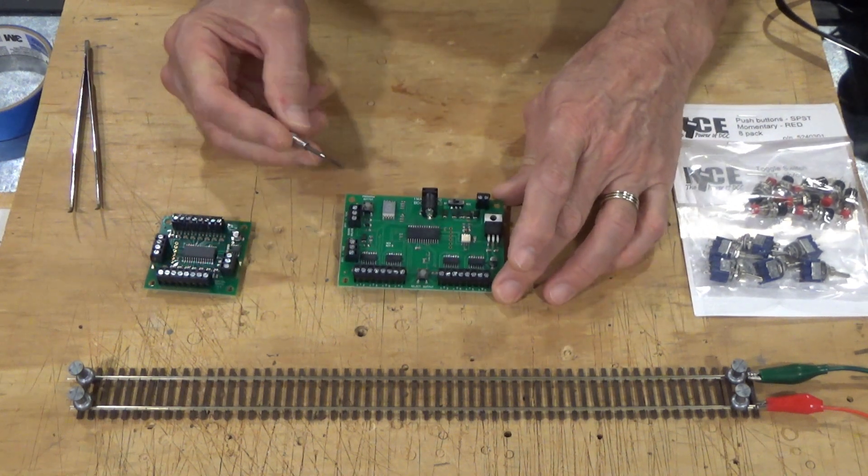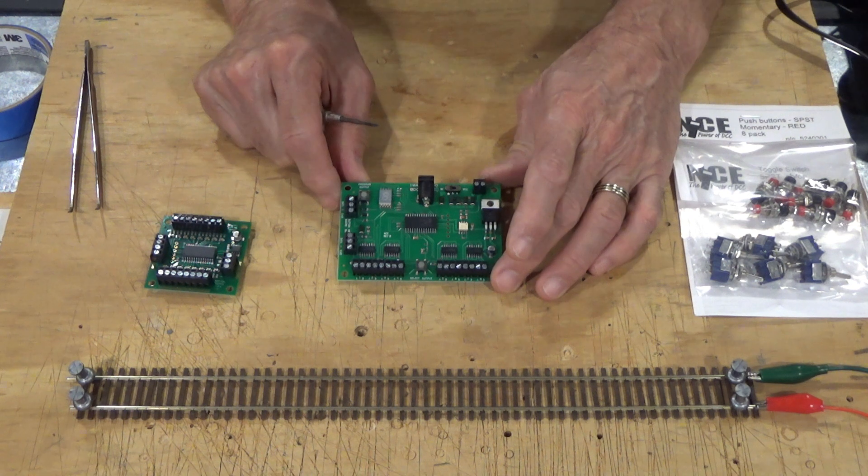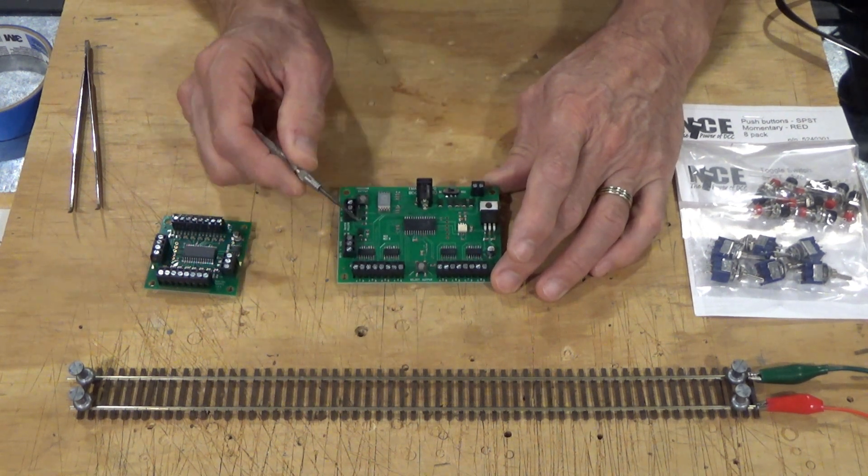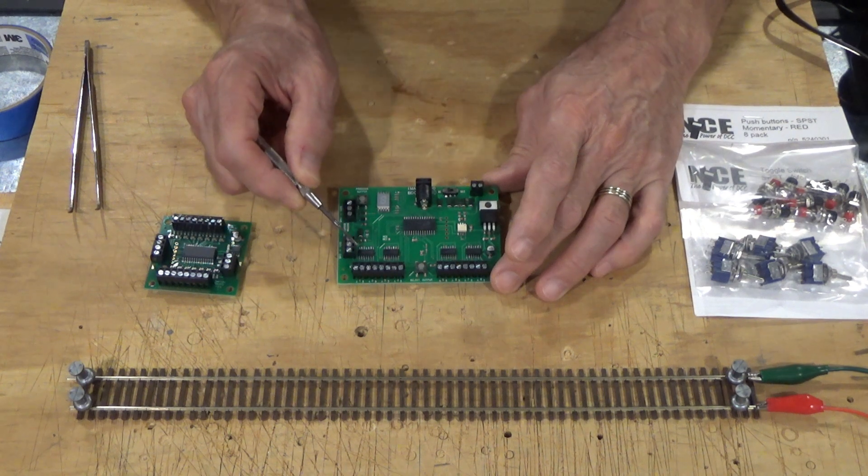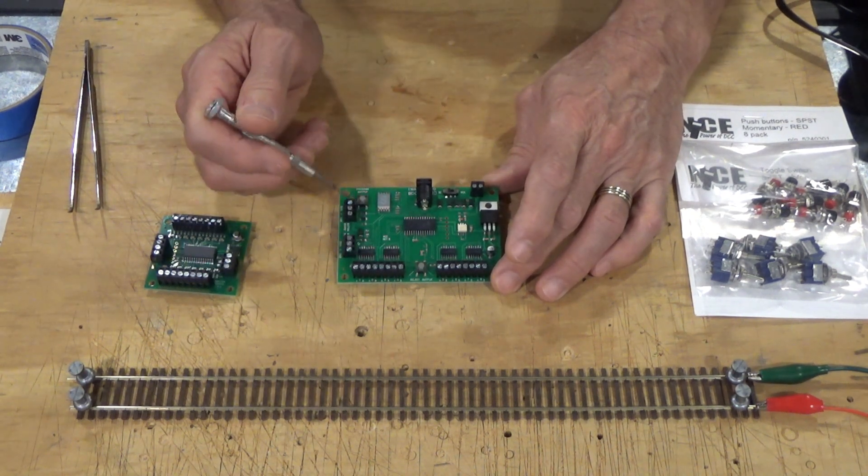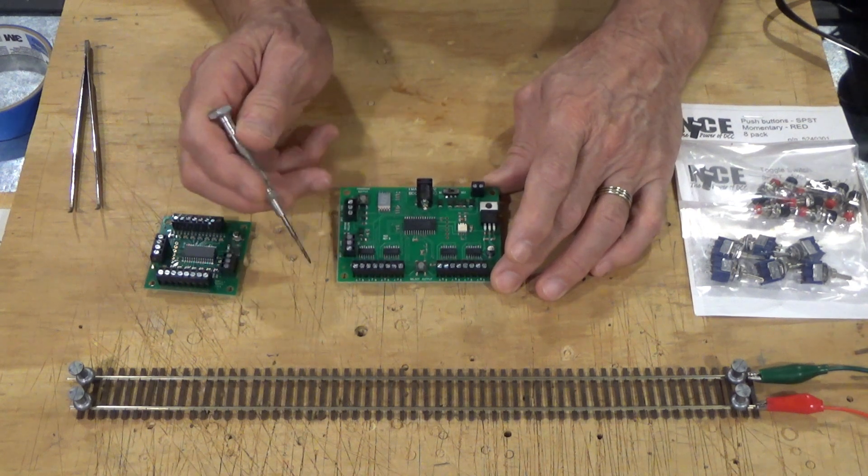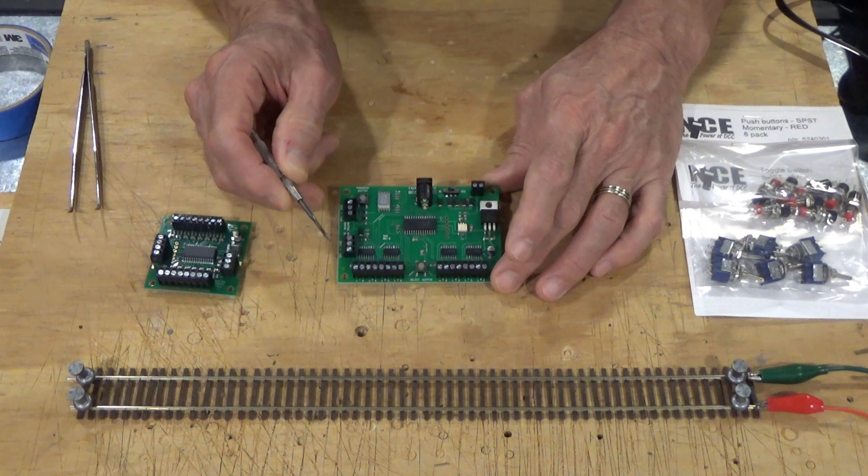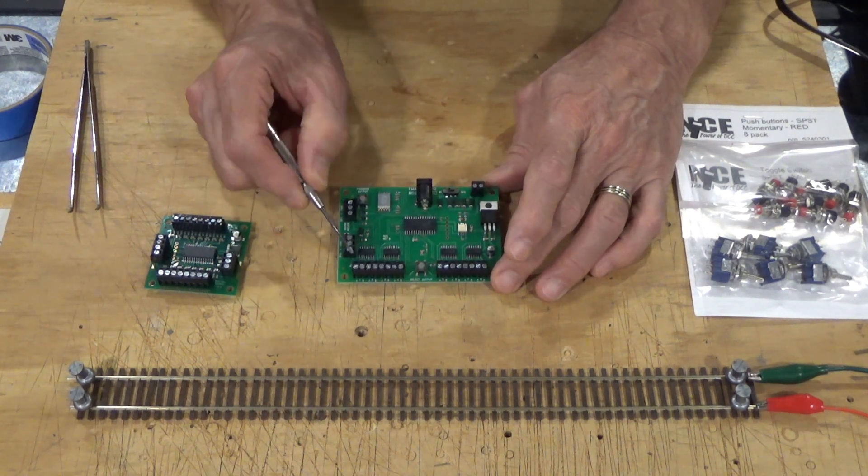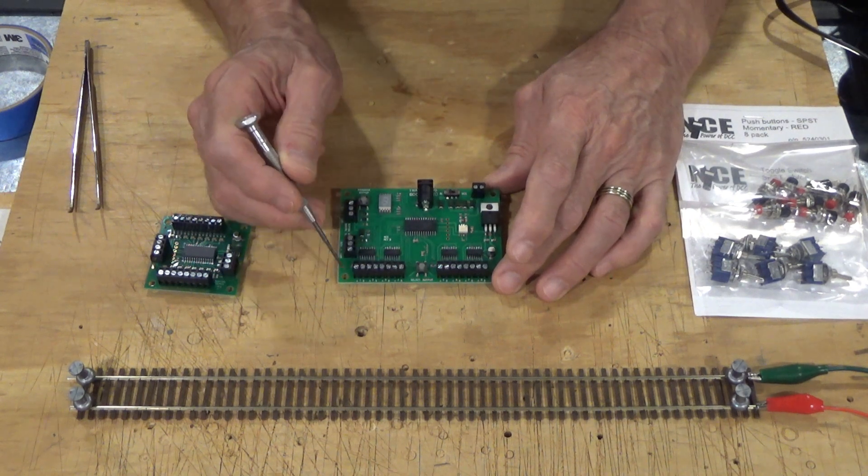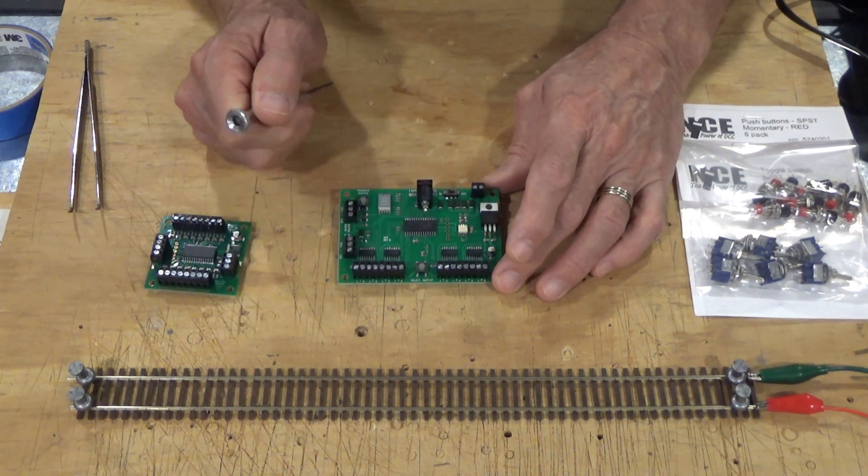These are designed to be used with tortoises or other slow motion type switch machines that are rated at no more than 40 milliamps. So you can operate one 40 milliamp switch machine or two 20 milliamp ones. This comes in very handy at crossovers where you have two turnouts and two tortoises, one controlling each, as you can wire those together and control both with one output.